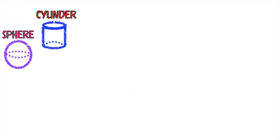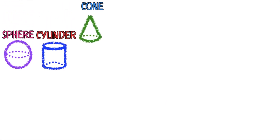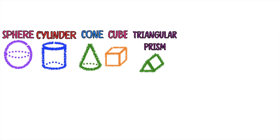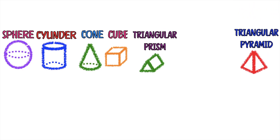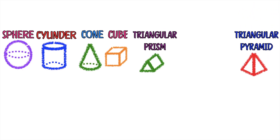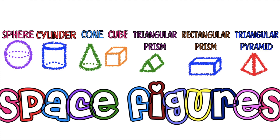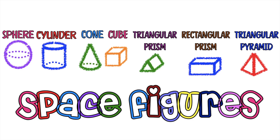So we have sphere, cylinder, and cube, triangular prism, triangular pyramid, and rectangular prism. These are space figures or solid figures.